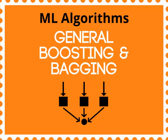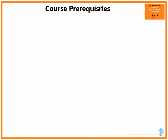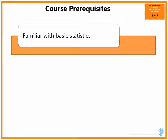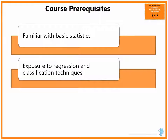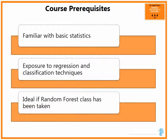In this course we will learn about two more ensemble techniques from Decision Tree, namely Bagging and Boosting. If you are wondering about the required background to take this class, you should be familiar with basic statistics with some exposure to regression and classification techniques. It would be ideal if you have taken the Random Forest class as well, since there will be many concepts here which I will briefly touch upon that have been explained in detail in the earlier class.